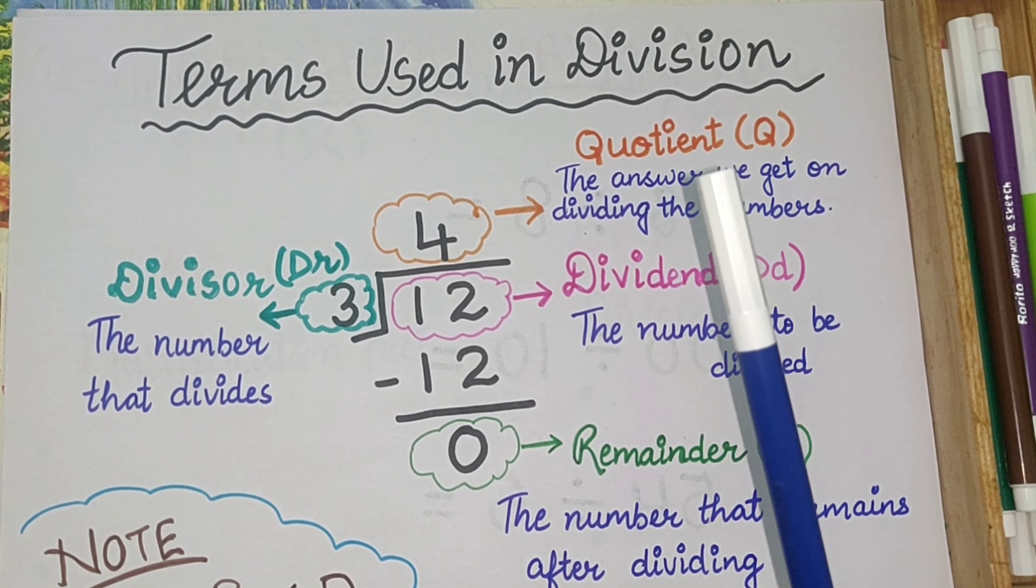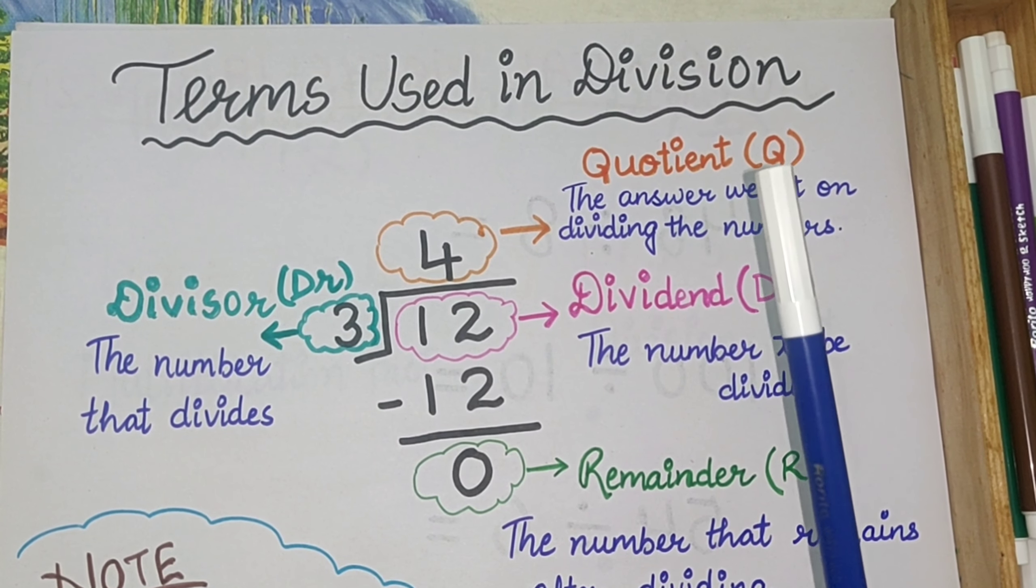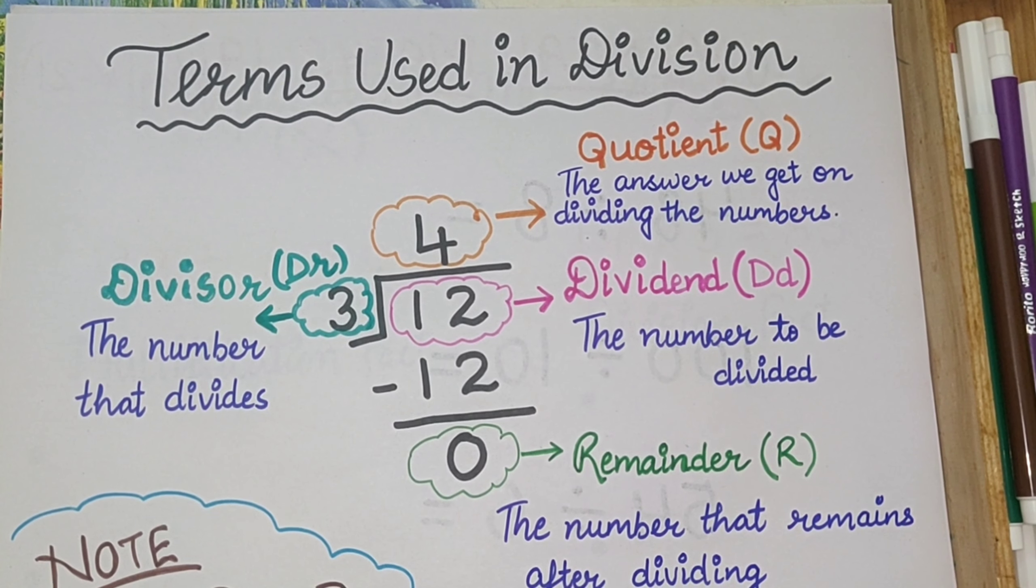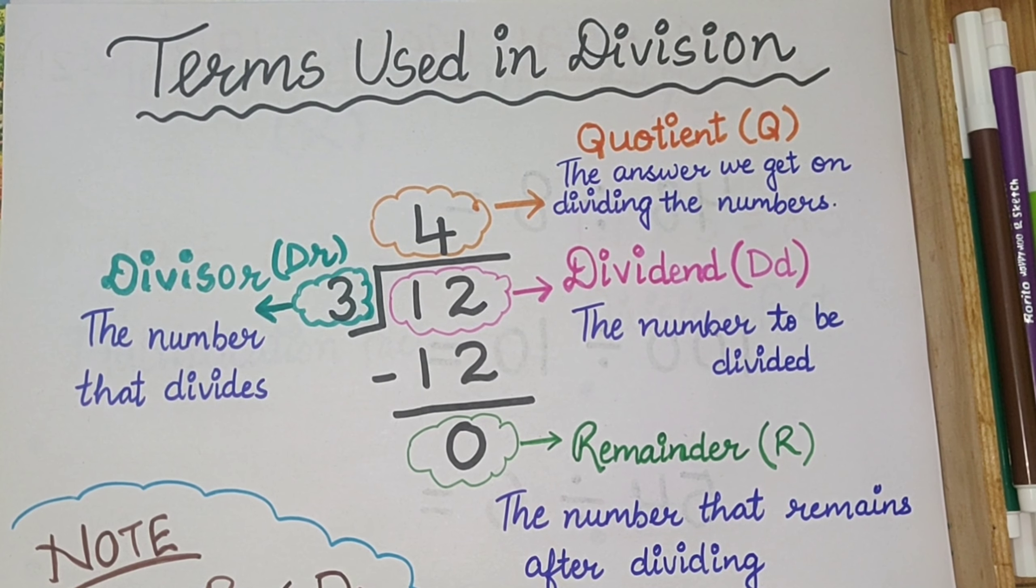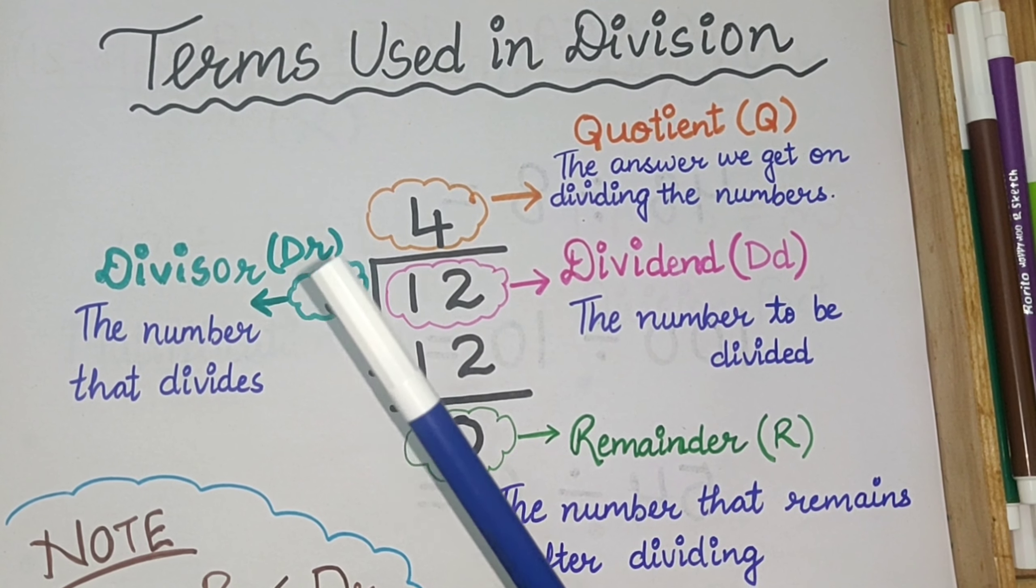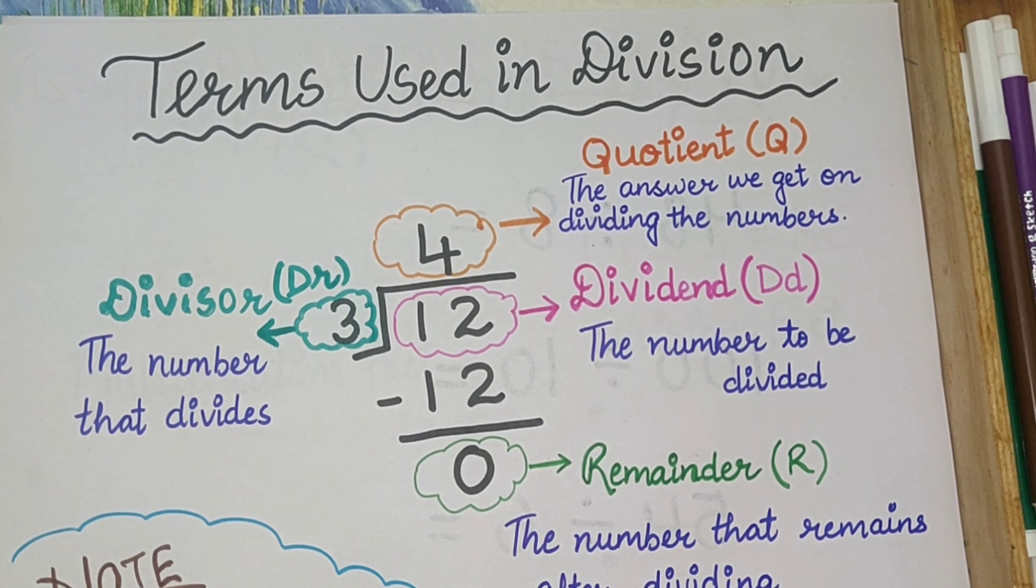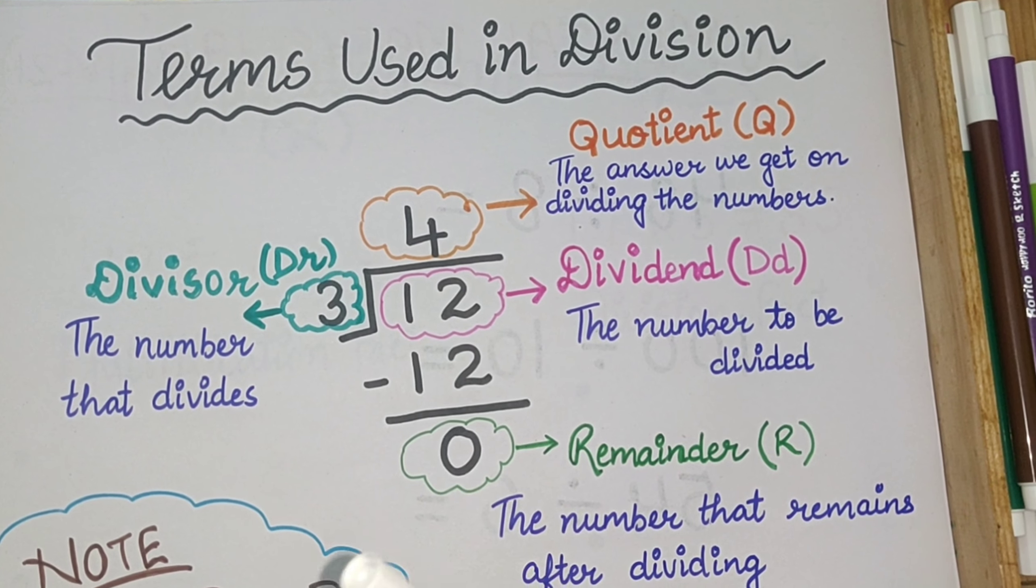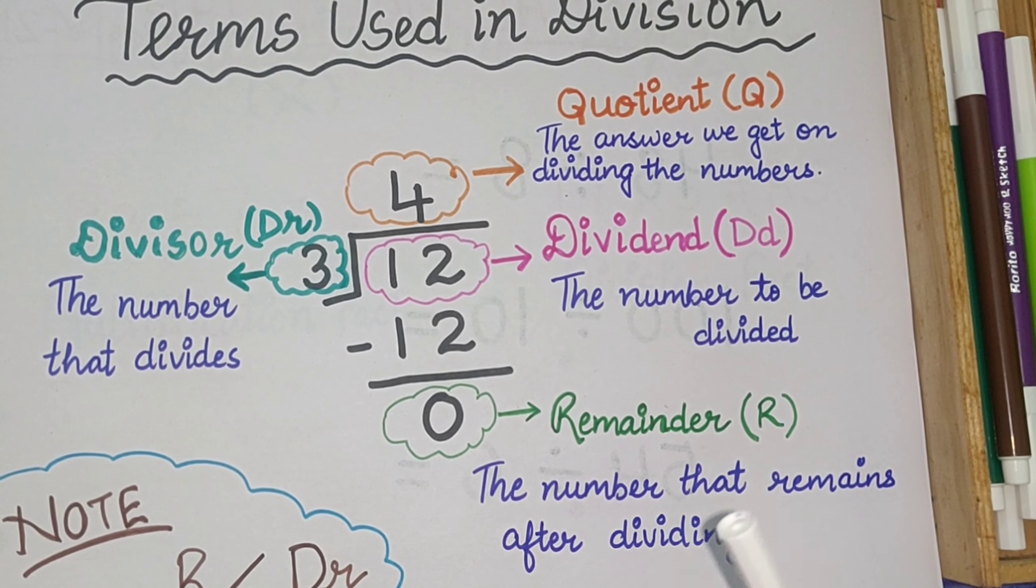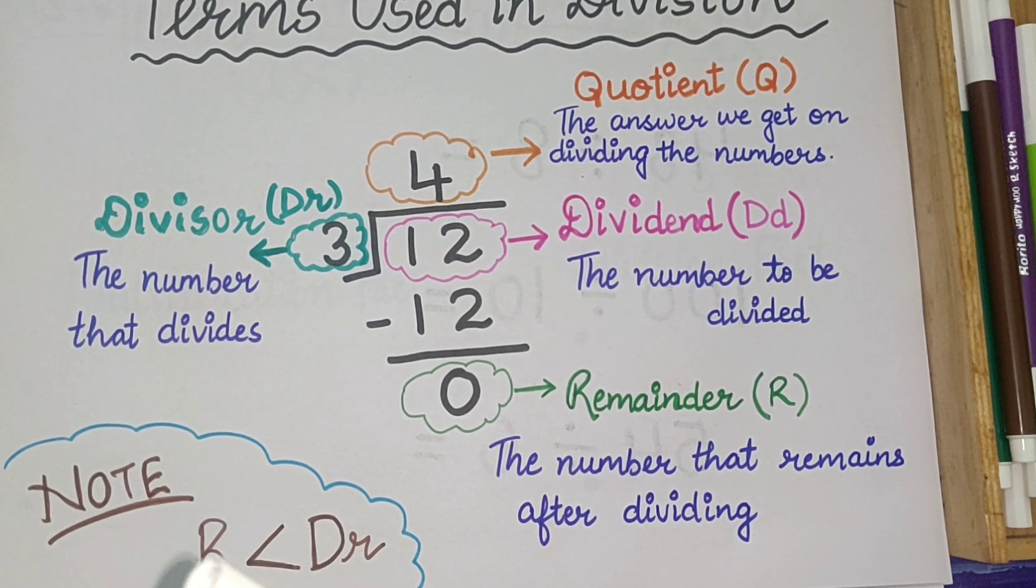What is quotient? Quotient is denoted by capital Q. The answer that we get on dividing the numbers is called quotient. What is divisor? Divisor is denoted by capital D and small R. The number that divides is called divisor. What is remainder? Remainder is denoted by capital R, and the number that remains after dividing is called remainder.